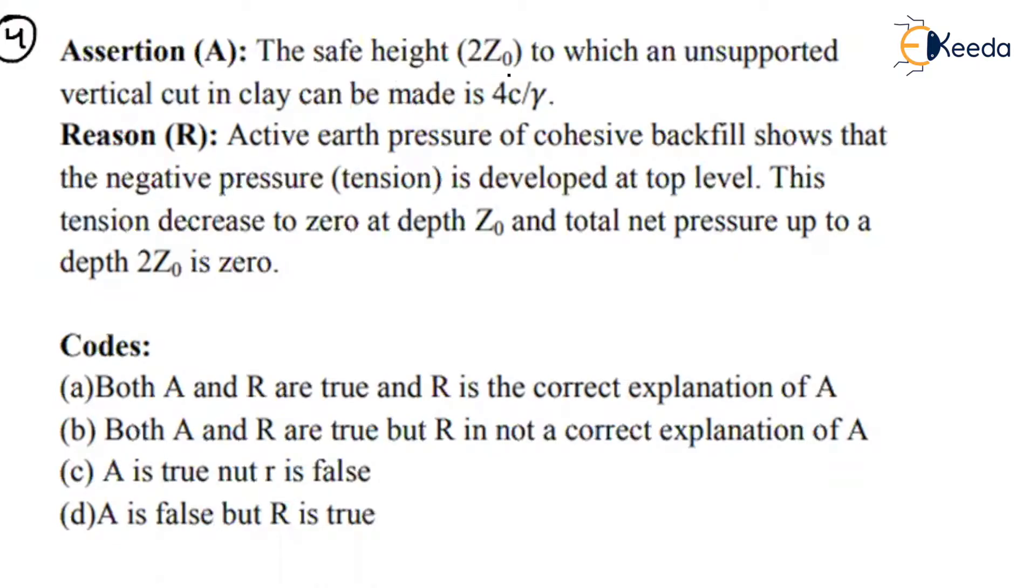The safe height 2Z₀ to which an unsupported vertical cut in clay can be made is 4C by gamma. Is it correct or not? What is the unsupported height? In general, the unsupported height will be 4C by gamma times root Ka.